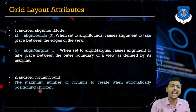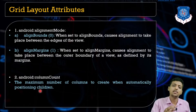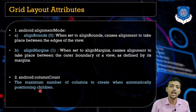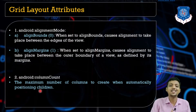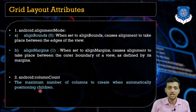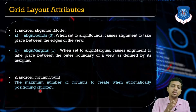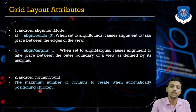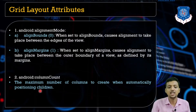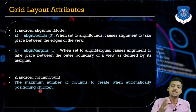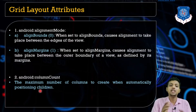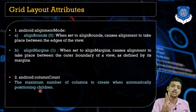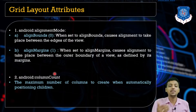When we talk about grid attributes, the first is alignMode. There are two types: align_bounds and align_margins. Align_bounds is zero by default — it aligns between the edges of the views. When set to align_margins, alignment takes place between the outer boundary of the views as defined by their margins. The second attribute is columnCount — the maximum number of columns inside the Grid Layout.